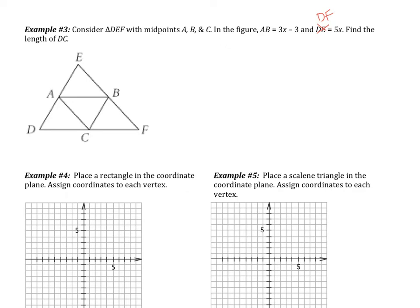Let's see how we did. This is the same figure we've been looking at. We know that AB is 3X minus 3 and DF is 5X. Now I know that my midsegment, 3X minus 3, is going to be one-half of the base, one-half of 5X. Solving this, you should have ended up with X equals 6, and then DC is 15.